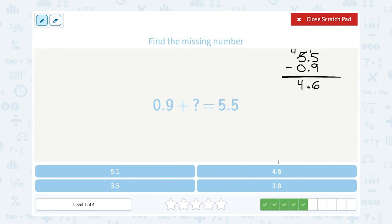So we would have had to add 4.6 to 0.9 to get 5.5.